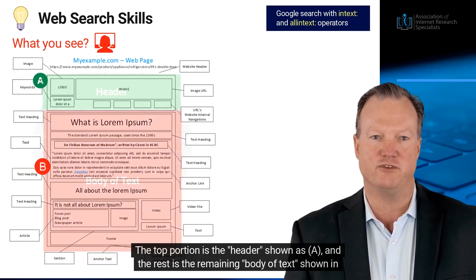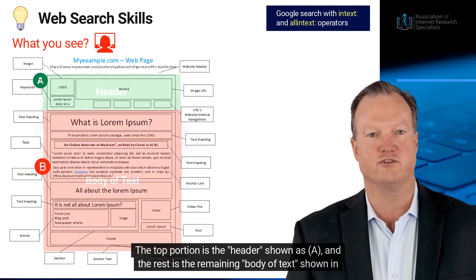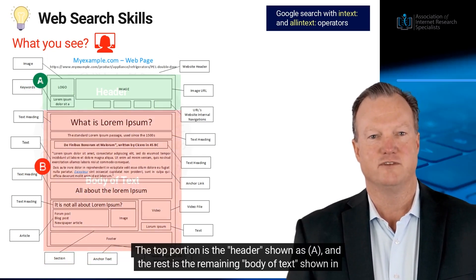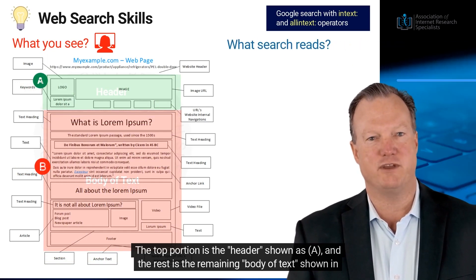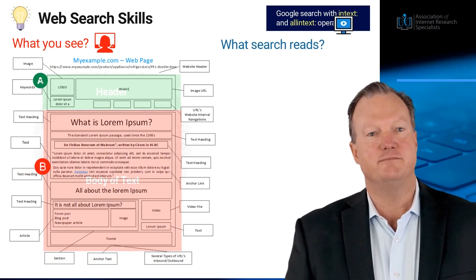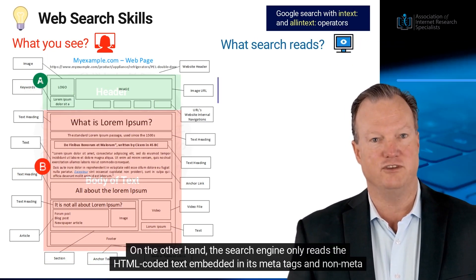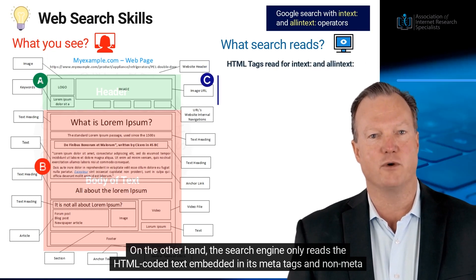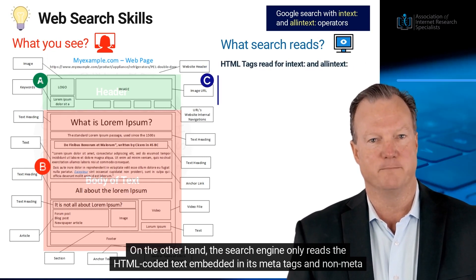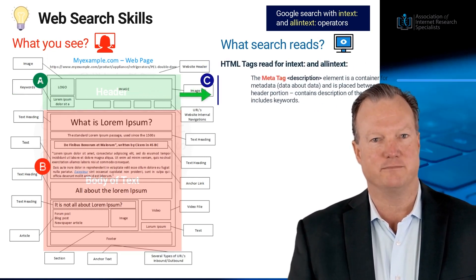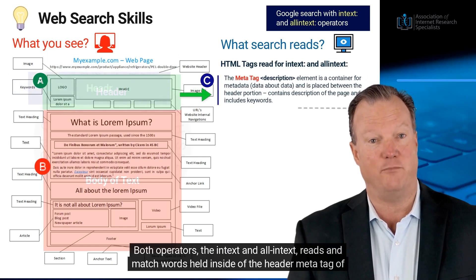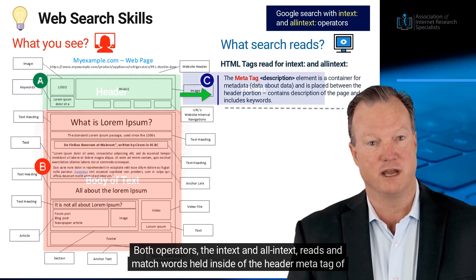The top portion is the header, shown as A, and the rest is the remaining body of text, shown in B. On the other hand, the search engine only reads the HTML-coded text embedded in its metatags and non-metatags. Both operators — the in-text and all-in-text —